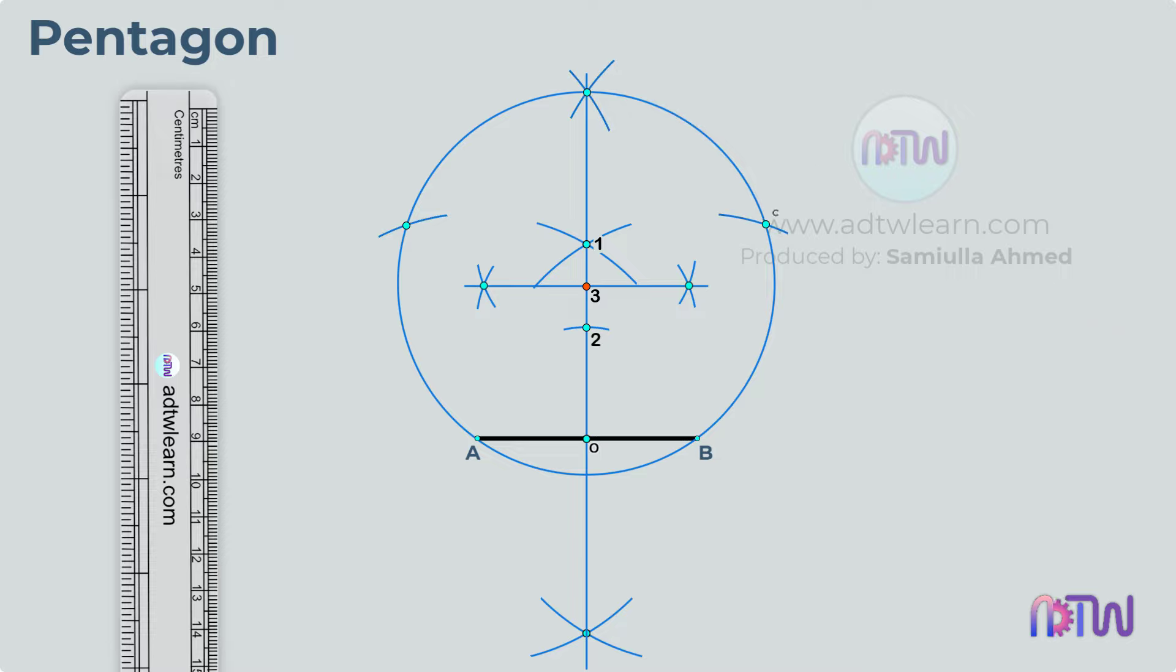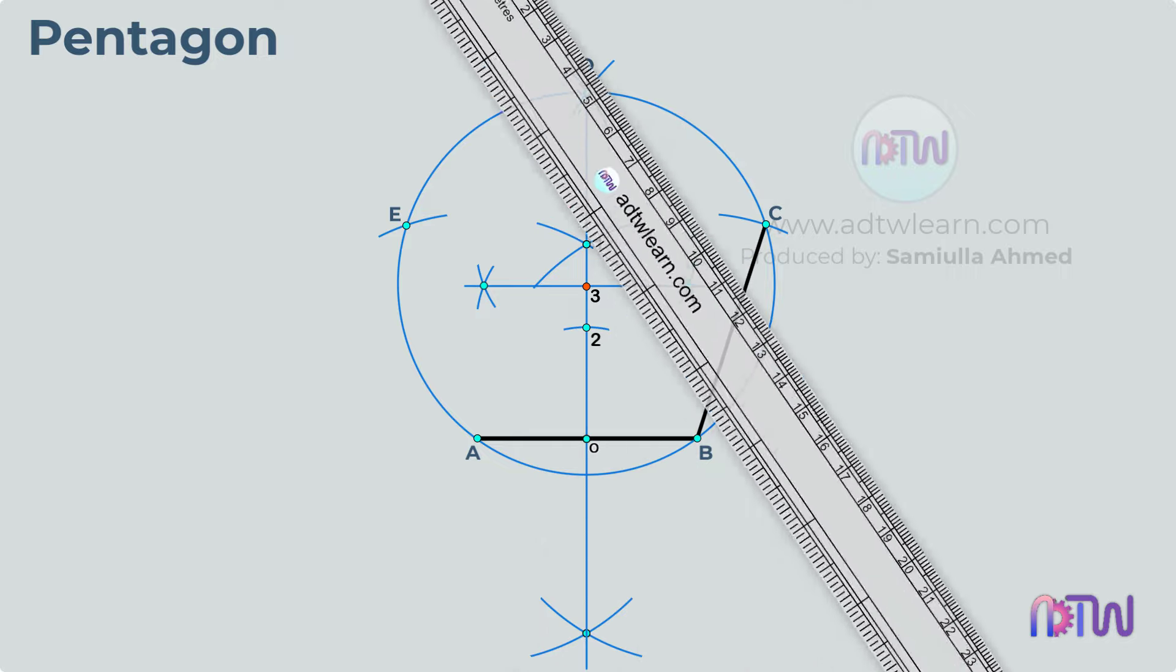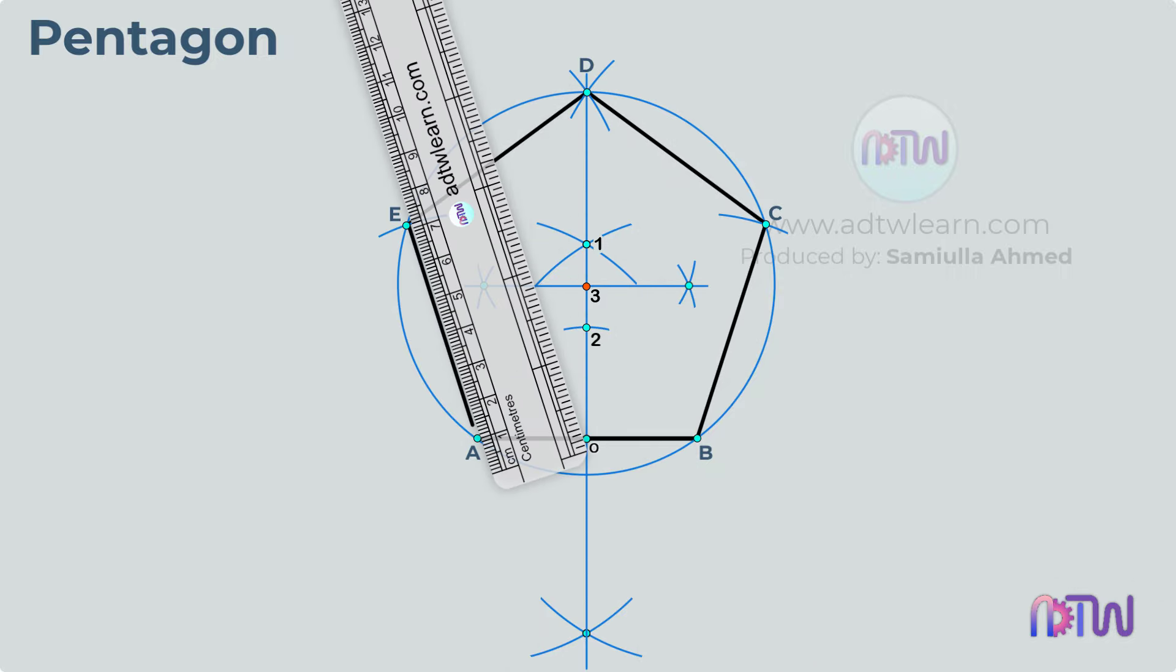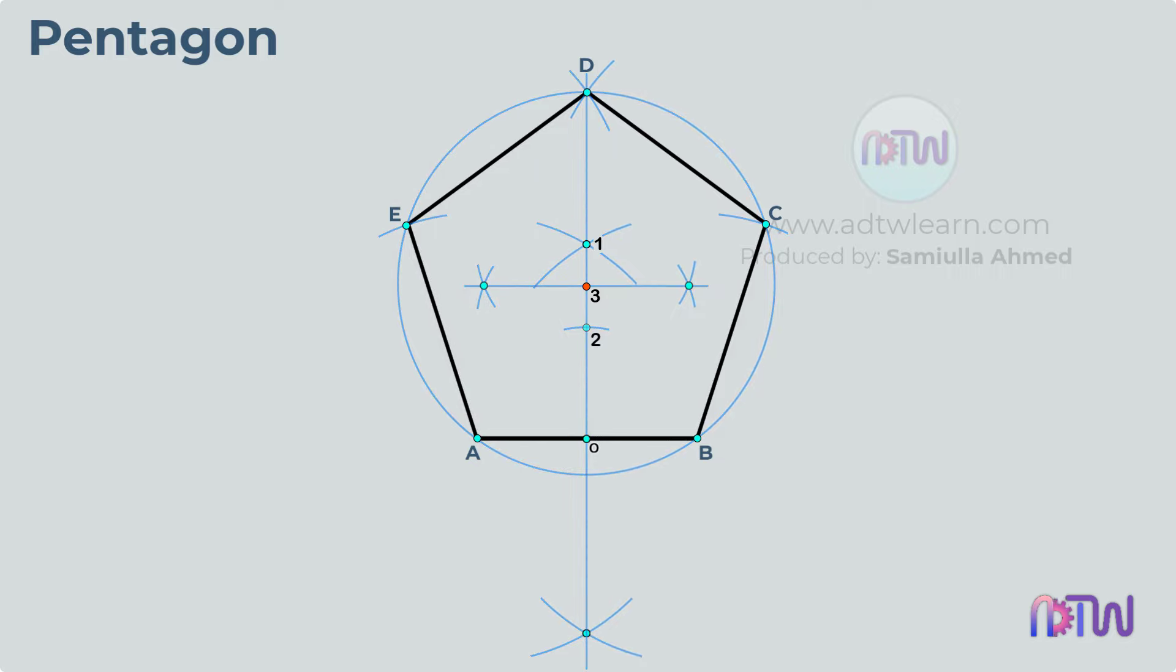Label these points as C, D, and E. In the end, take a ruler and draw a line connecting these points. This is our final pentagon.